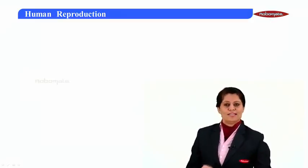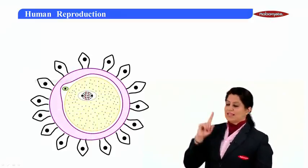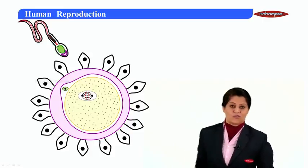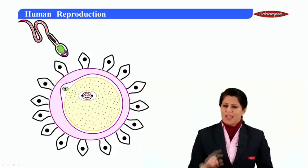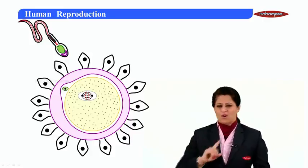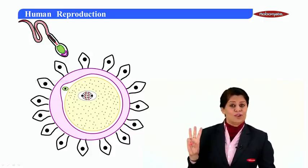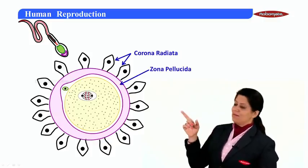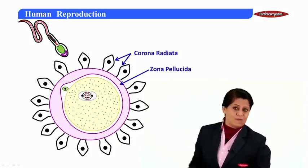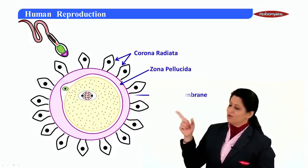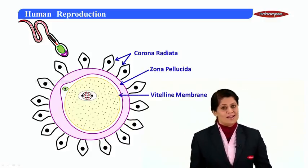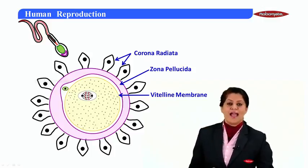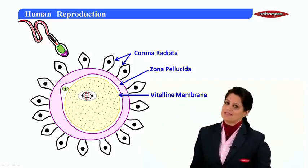Moving on to the details of the process — this is the human egg. The sperm trying to fertilize the egg has to penetrate or pass through three layers: the outermost corona radiata, then the second one, the transparent zona pellucida, and the innermost vitelline membrane. It needs to penetrate through these three layers for fertilization to be successful.